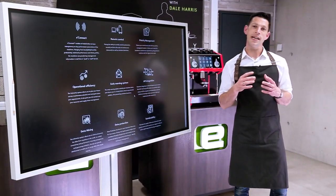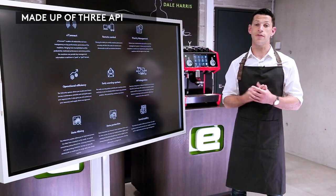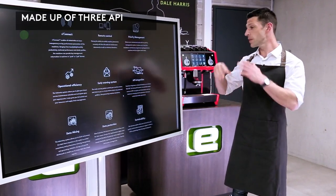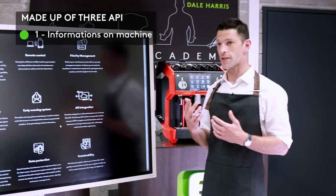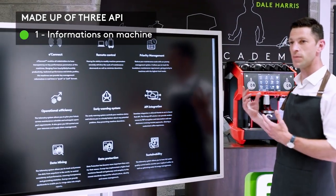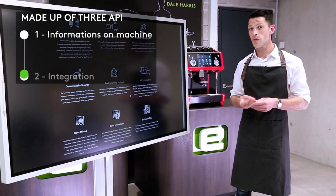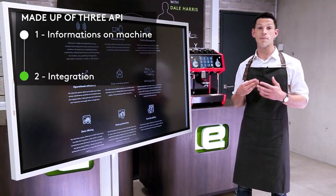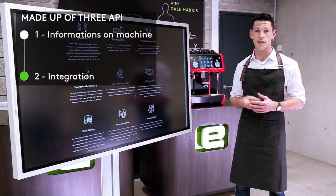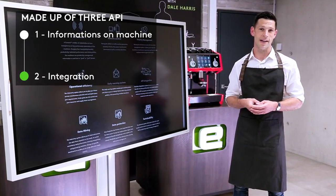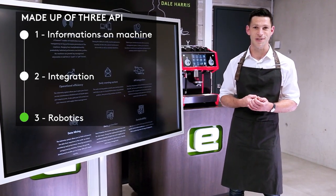The E-Connect system is made up of three separate APIs and they align different functionalities. One will give you access to all the information that the machine is building over time — every sensor and monitor that's in the machine, every product it produces. One will help you integrate your machine with different payment systems, so if you want to automate payment and make a self-service machine, there are possibilities there. And we have a third API which is tied to robotics and other more advanced solutions.